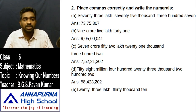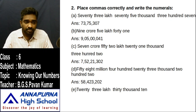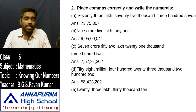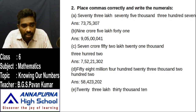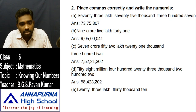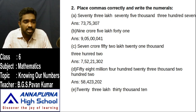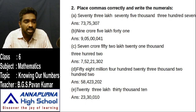Next one: twenty-three lakh thirty thousand ten. This is also the Indian system of numeration. Two in ten-lakhs, three in lakhs, three in ten-thousands, zero in thousands, zero in hundreds, one in tens, zero in ones. First comma comes after ones period, next comma after thousands period. Answer: 23,30,010.